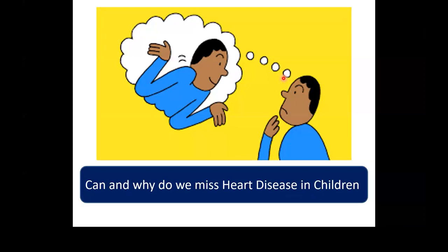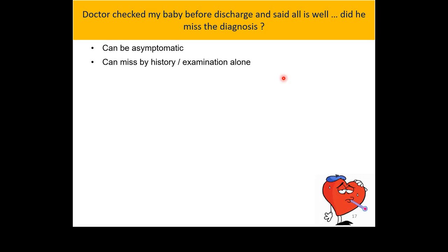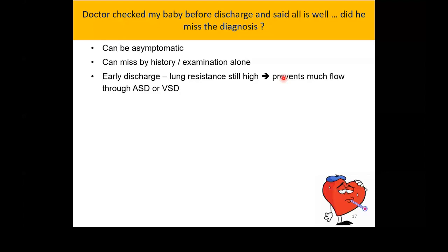Can and why do we miss heart disease in children? The baby can be normal at discharge on auscultation and examination alone. With early discharge after a caesarean section on day 1 or 2, the lung resistance is still high, so murmurs will not be heard because pulmonary pressures are high and the shunt is minimal. Once they go home, pulmonary pressures drop, lung resistance drops, and the shunt begins to appear, so a murmur is heard around four weeks.